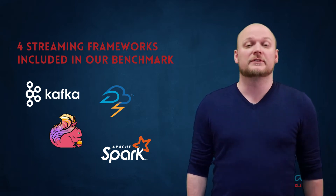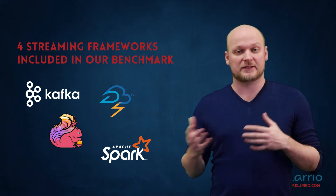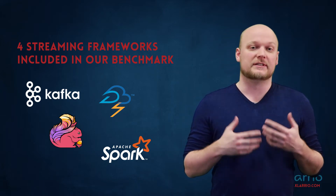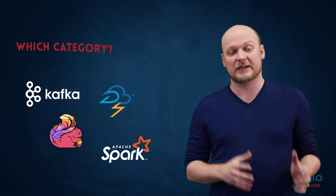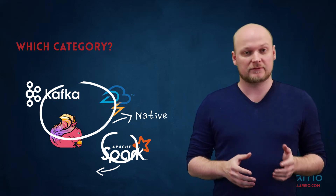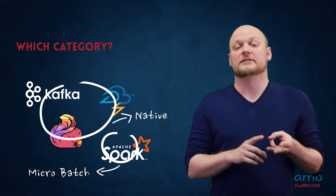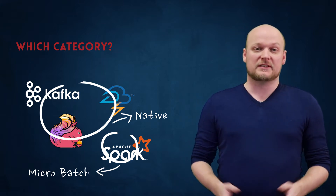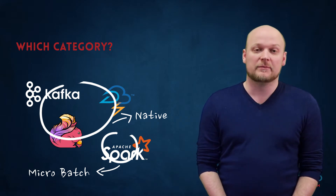A main thing in which these four frameworks differ is their streaming model. As discussed earlier in one of the videos, we have two different streaming models: native stream processing and micro-batch stream processing. Three of the frameworks are native — Kafka Streams, Apache Flink, and Storm — and the micro-batch framework is Apache Spark. This has some implications on latency, but we'll get to that later.